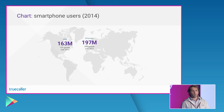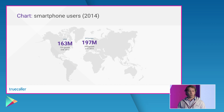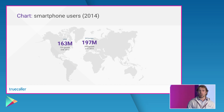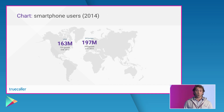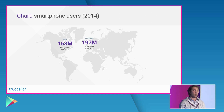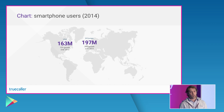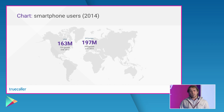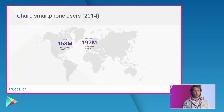So when companies and entrepreneurs want to launch new products they usually think about the Western markets — North America and Western Europe — and those have a fairly big amount of potential users. At the end of 2014 there were 163 million smartphone users in the United States and 197 million in Western Europe, and this number is growing but in a moderate way.